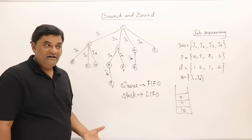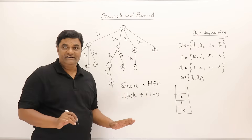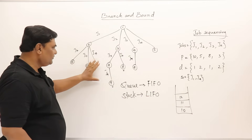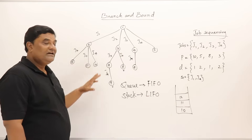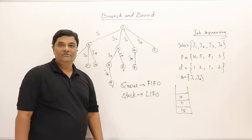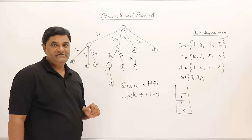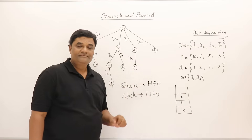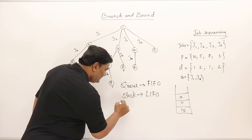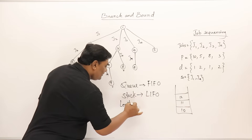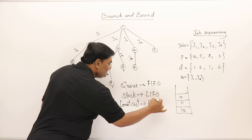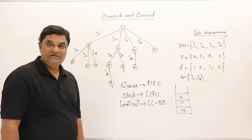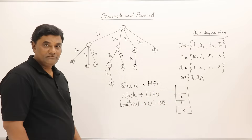With both FIFO and LIFO, you still follow breadth-first search: once you pick a node for exploration you explore all possible child nodes before selecting the next. The selection of the next node comes from either a queue or a stack. There is one more method — least cost branch and bound (LC branch and bound) — which I will explain now.